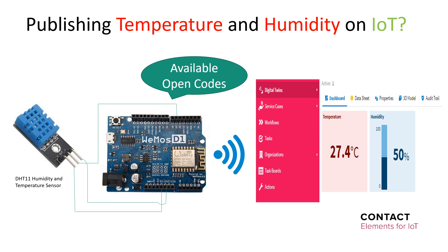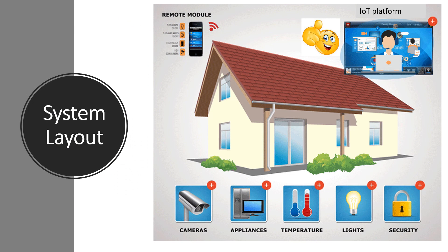As shown in this figure, we connect the temperature and humidity sensor with the Arduino module. For this system I use Arduino IDE to write the IoT code and define the MQTT service address. Here is an example of a smart home with a system layout in which the IoT can publish the readings of temperature and humidity.